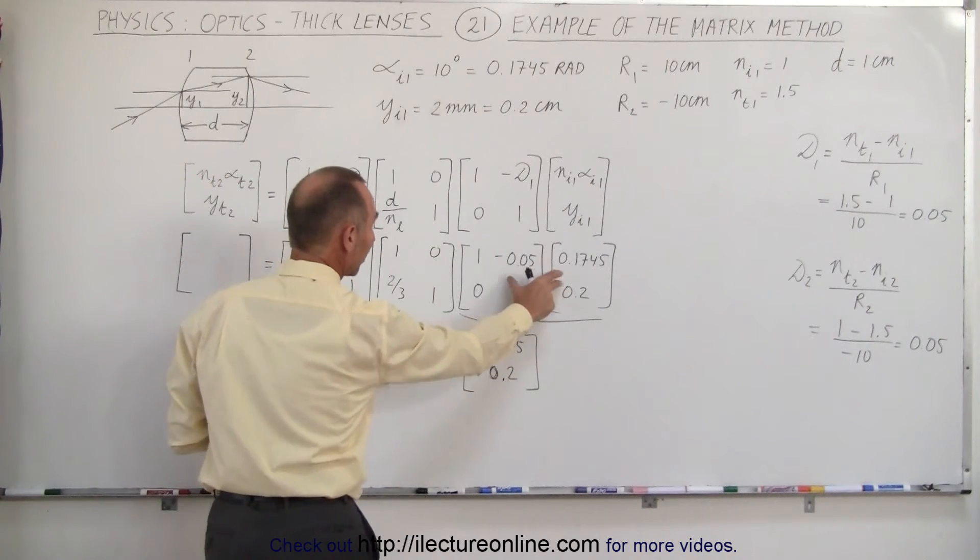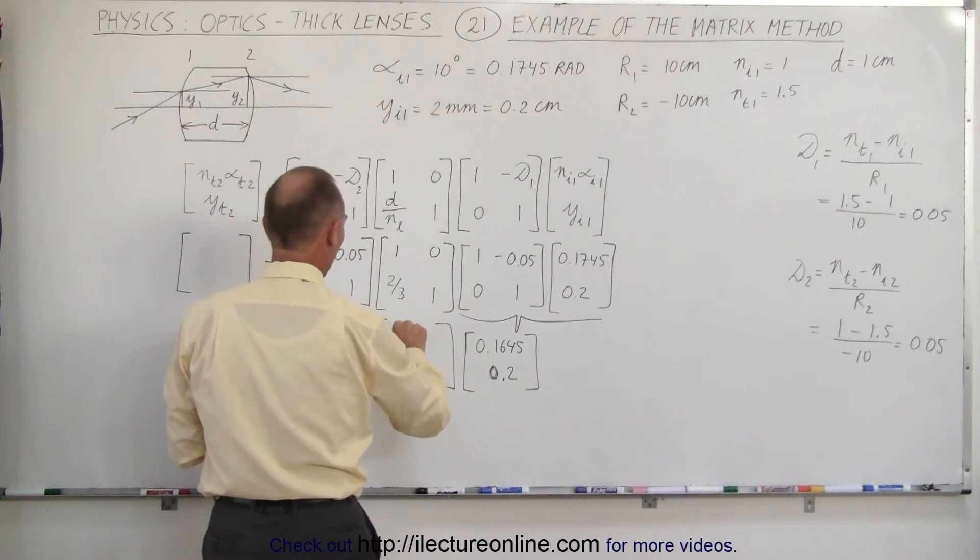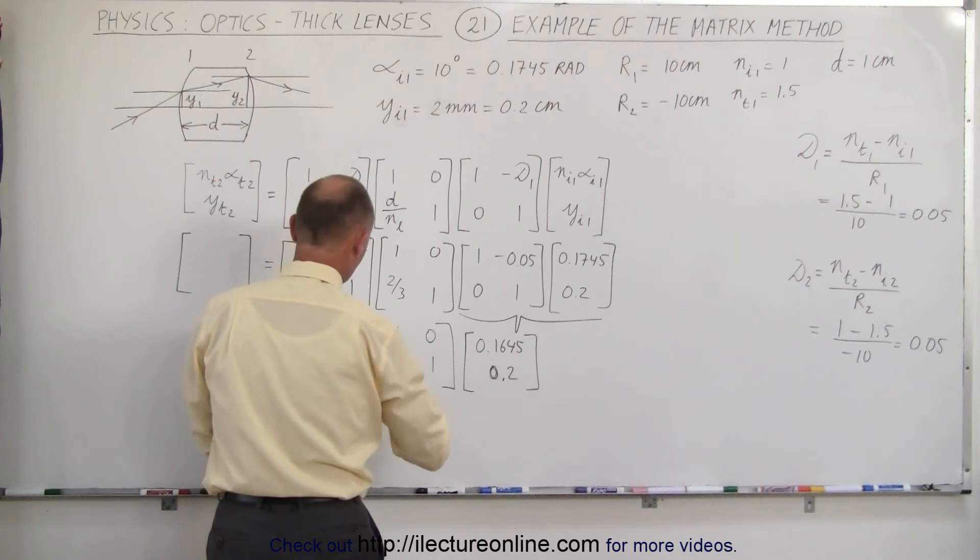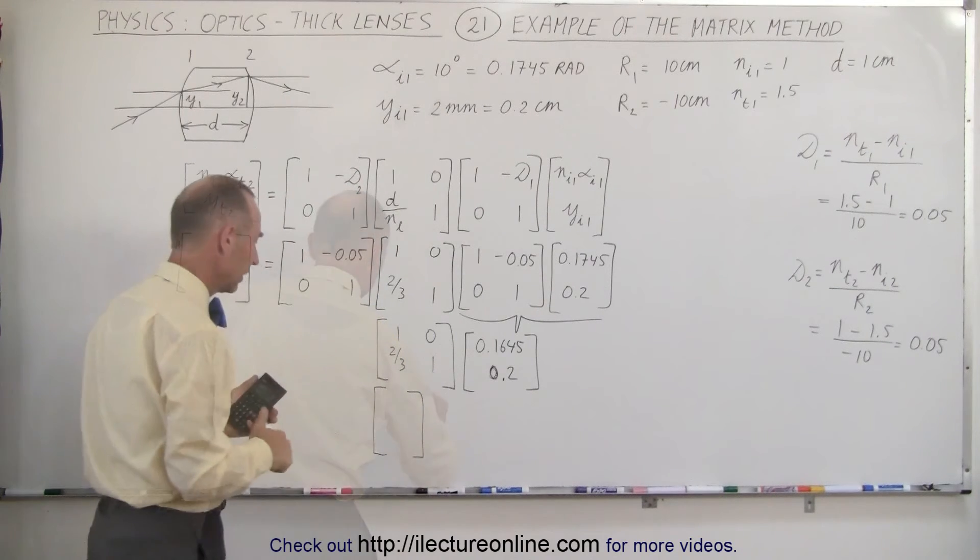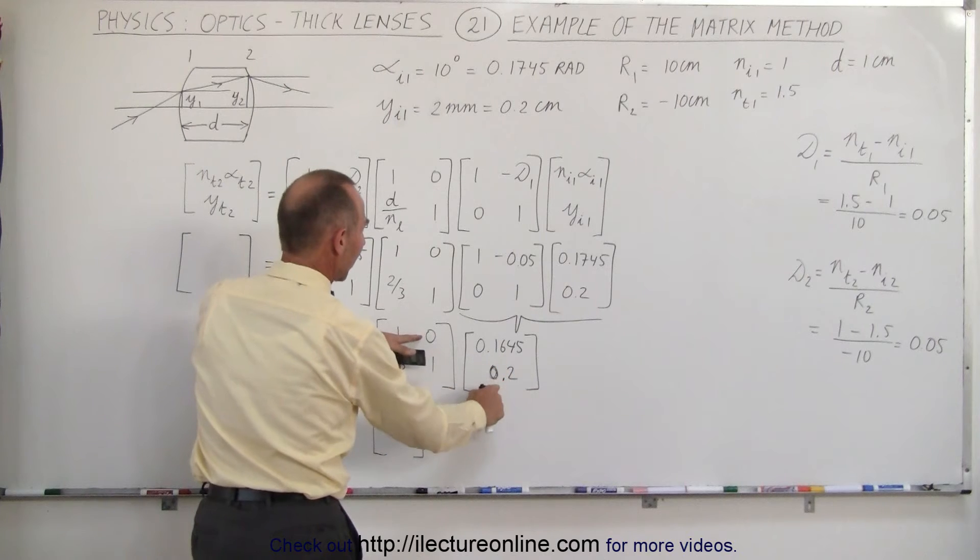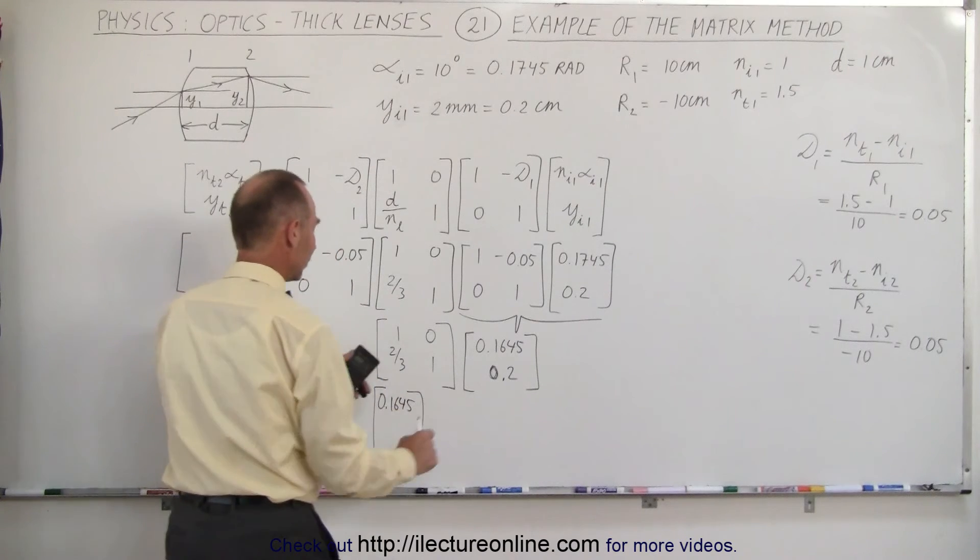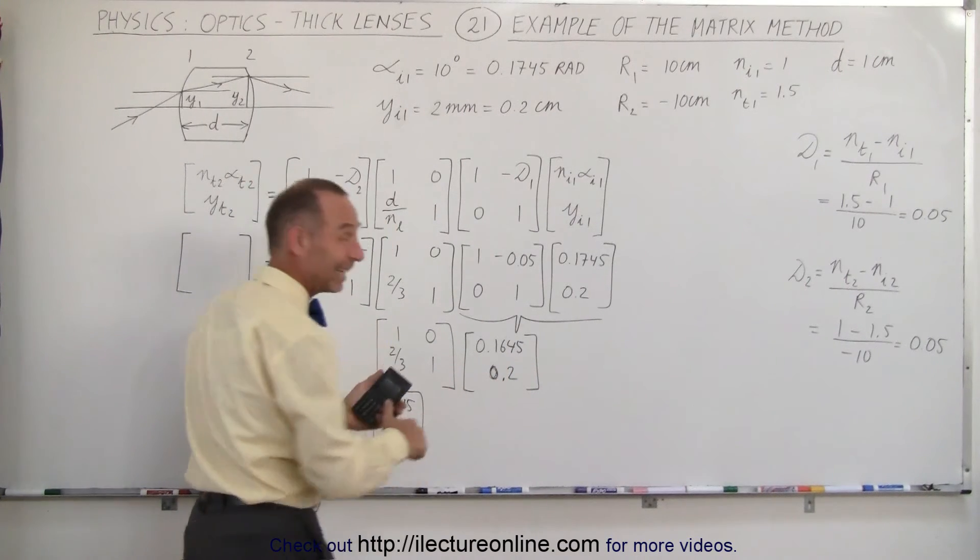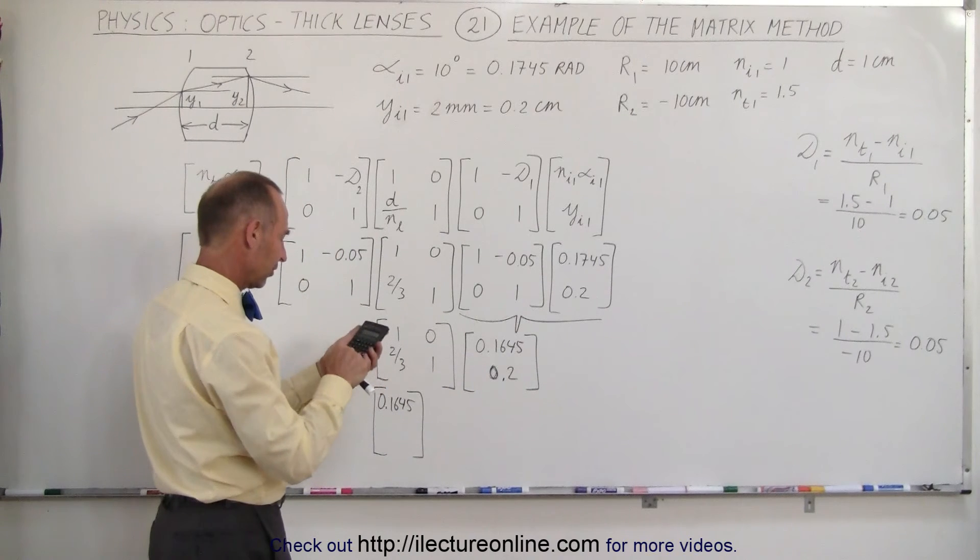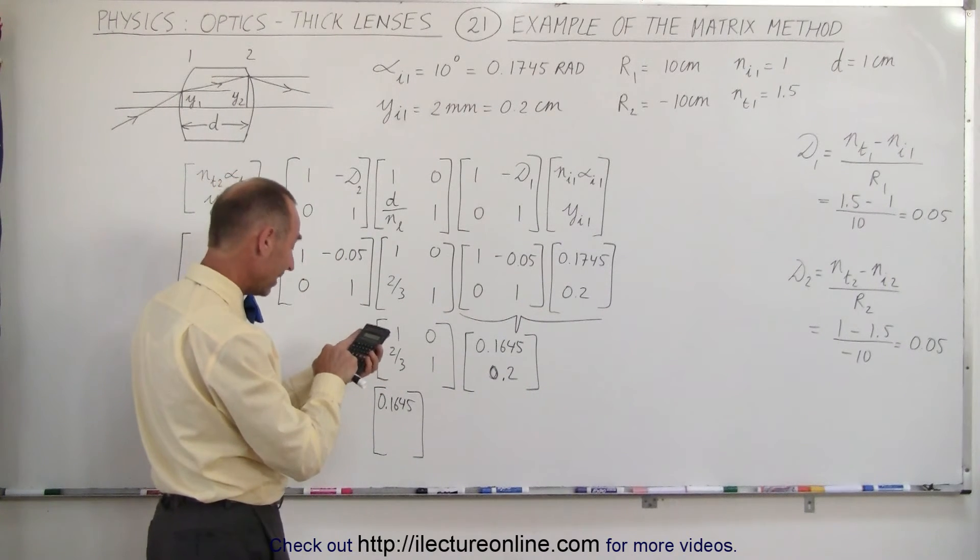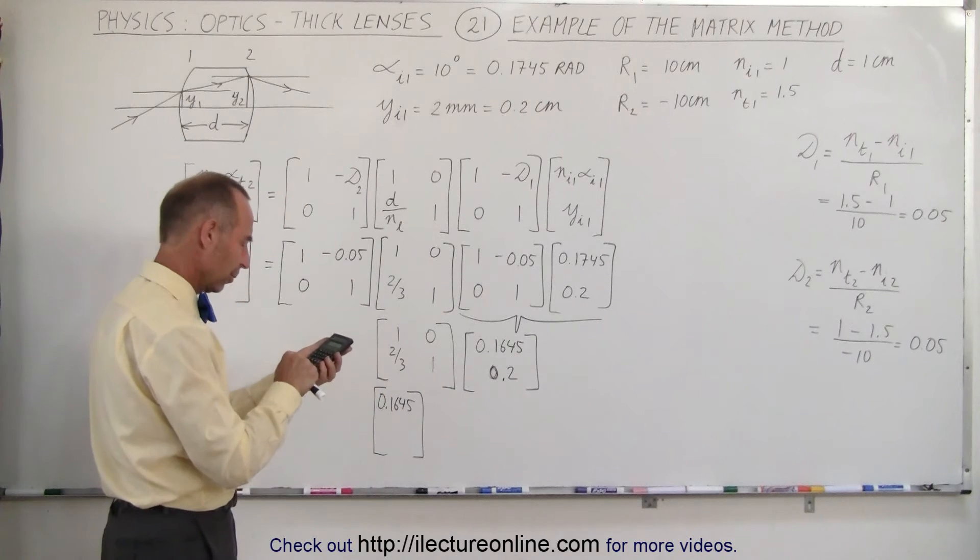Now we have to multiply the results of that multiplication times this matrix. We have 1, 0, 2 thirds, and 1. So when we multiply those two together, 1 times this plus 0 times this gives us simply 0.1645. And then 2 thirds times this plus 1 times that, I need to calculate it. So 2 thirds times 0.1645 plus 0.2 equals, and we get about 0.3097.